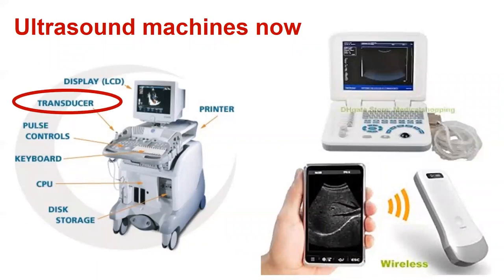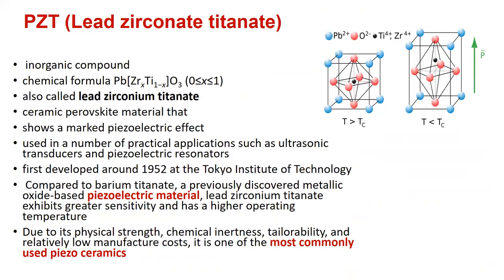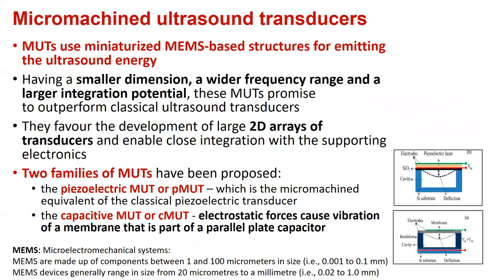Probably the most important part of an ultrasound machine is the transducer. These transducers use piezoelectric crystals, which have undergone large improvement and development over time. The most commonly used piezoelectric crystal was piezoceramic lead zirconate titanate. But later on, so-called micromachined ultrasound transducers were developed, and these miniaturized microelectromechanical system-based structures were used for emitting ultrasound energy.